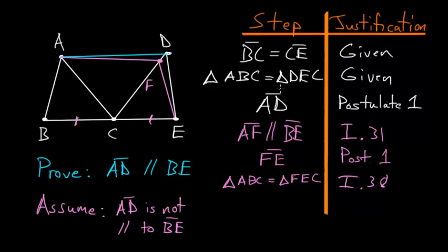So due to Common Notion number 1, we know that triangle FEC would equal triangle DEC. Triangle FEC equals triangle DEC. But here's where we run into a contradiction, because we already know due to Common Notion number 5